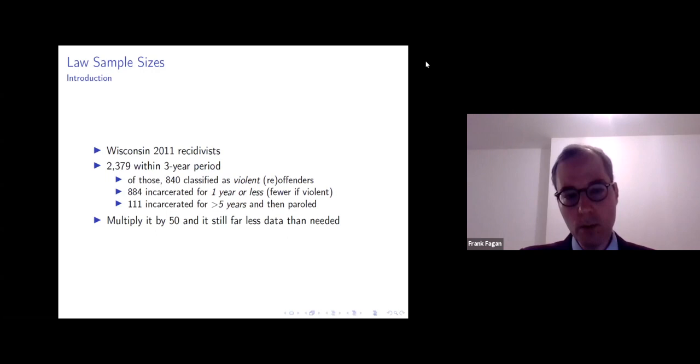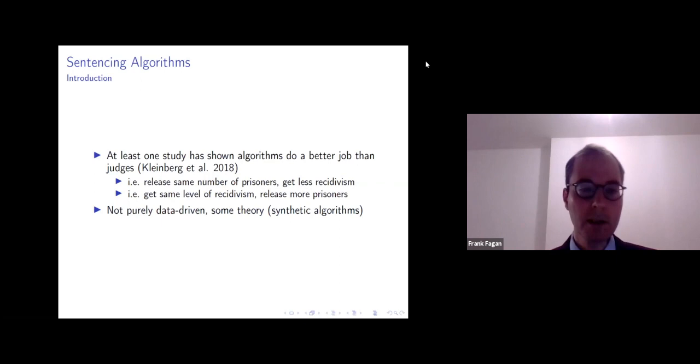So what this means for law, at least in the sentencing context, is that these algorithms are not purely data-driven. There's some theory. And for instance, this Kleinberg paper, which is John Kleinberg and co-authors, which is widely cited as an important paper for sentencing, this was published in the Quarterly Journal of Economics. Kleinberg and co-authors have later been contracted with the state of New York to develop a sentencing algorithm there.